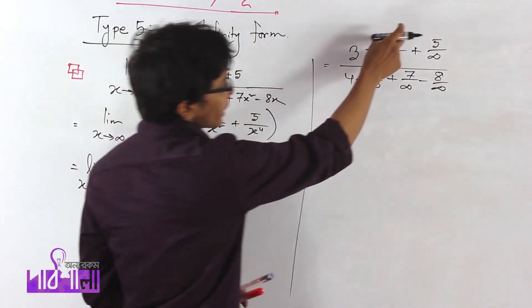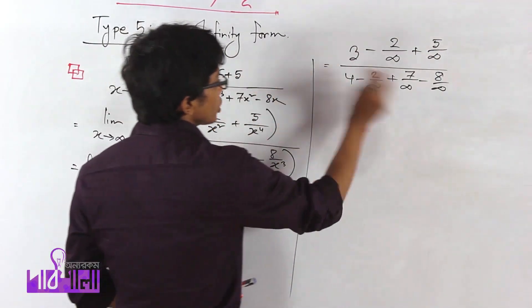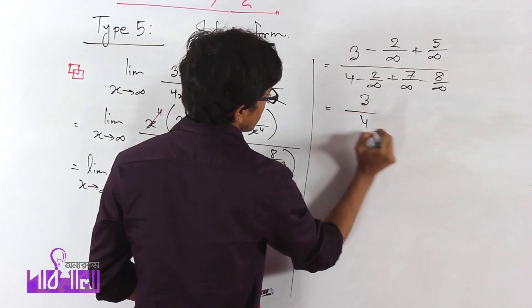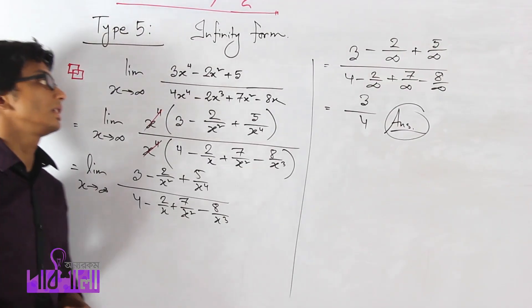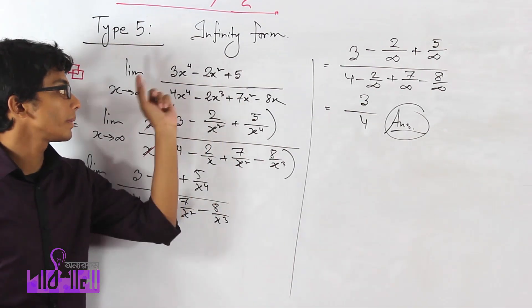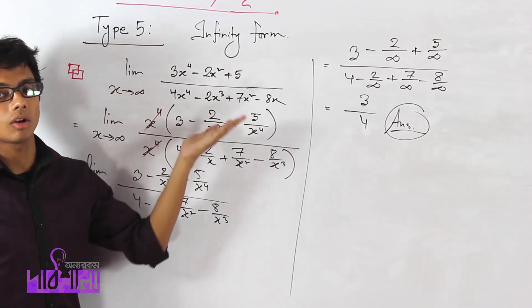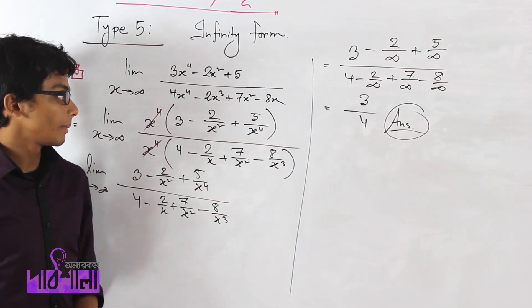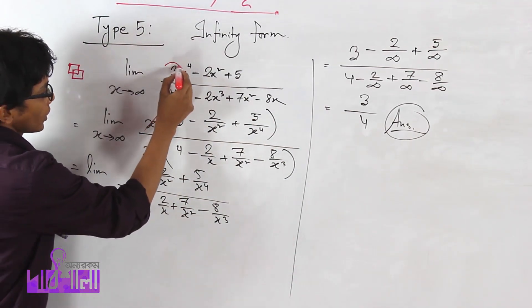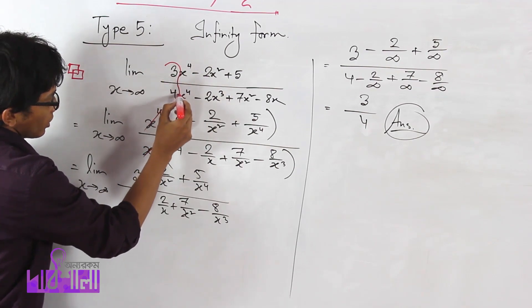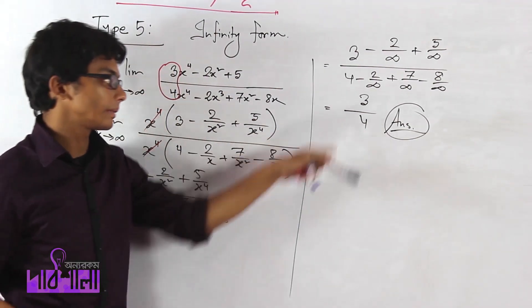Any term with x in the denominator will tend to 0 as x tends to infinity. So all those terms become 0, and the answer simplifies to 3 over 4.